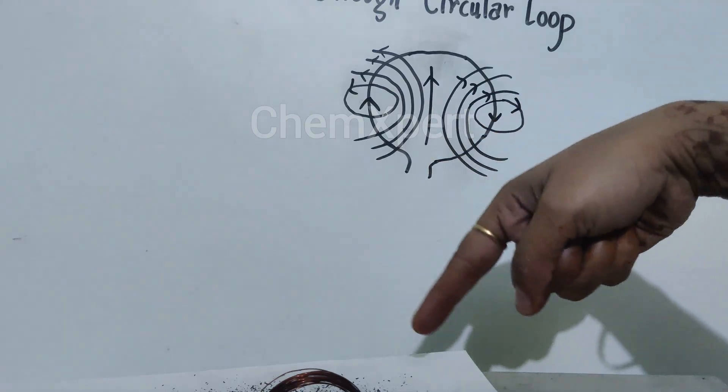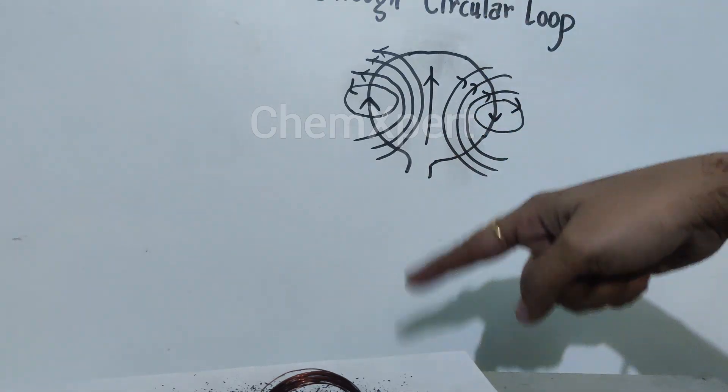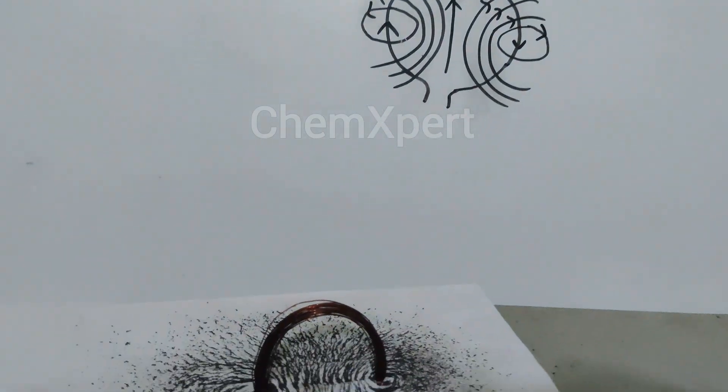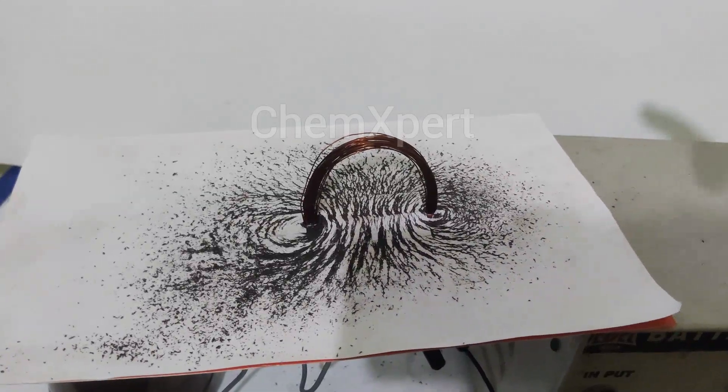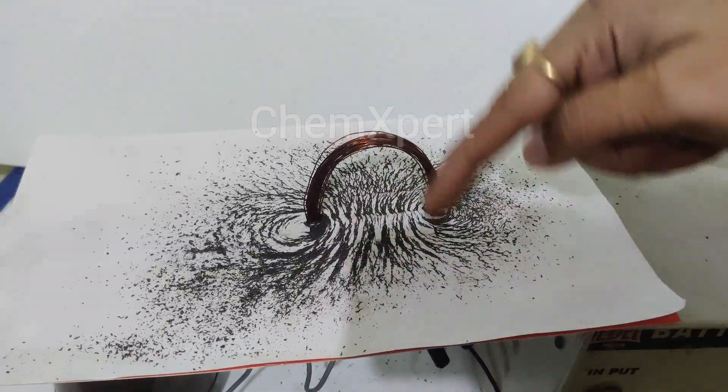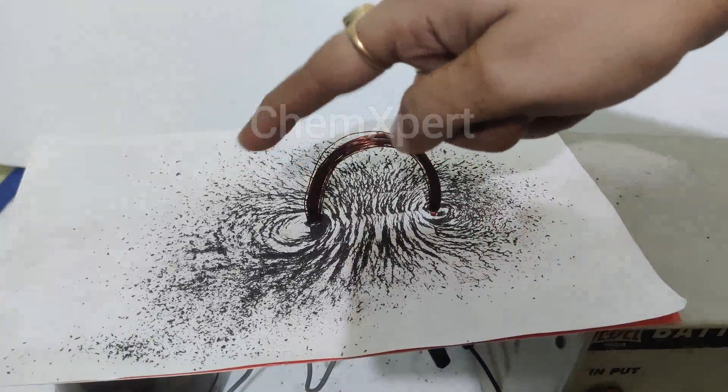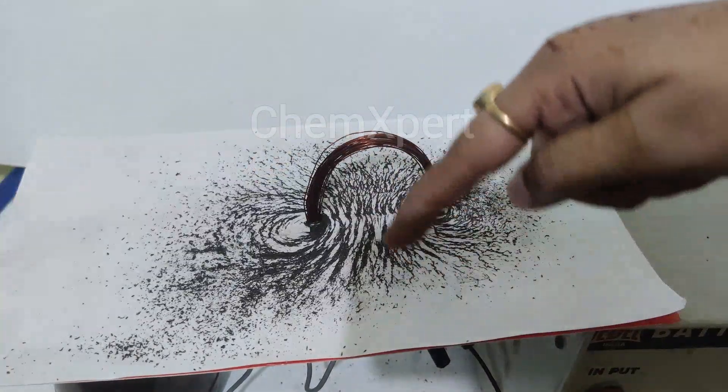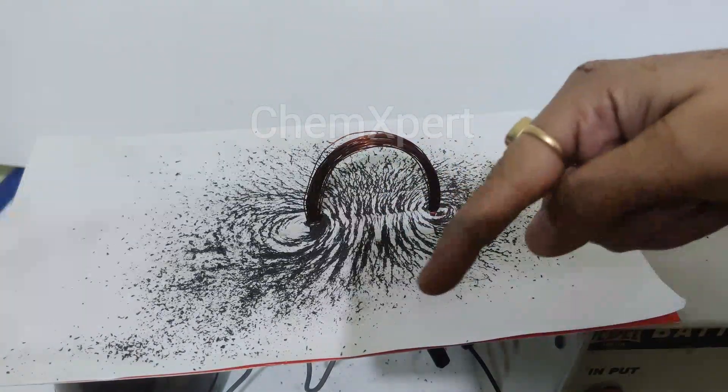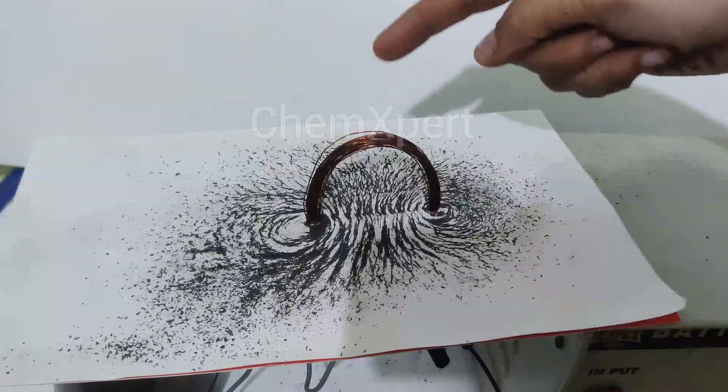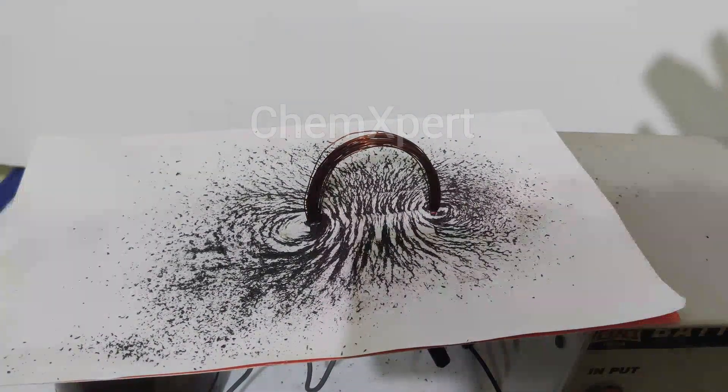These are uniform lines. You can observe in the center there are these straight lines. Here we are getting concentric circles at both ends, but in the center of the circular loop these are uniform parallel lines.